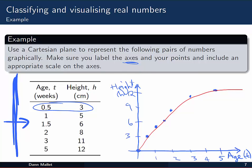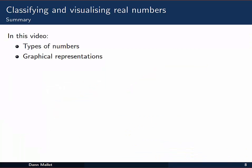Anyway, that's our first look at classifying and visualizing real numbers. So in this video we've looked at, remember, some types of numbers, how to classify the real numbers: integers, naturals, irrationals and rationals. And we've also looked at a couple of graphical representations, the number line and the intersecting number lines of the Cartesian plane. That's it for this video.